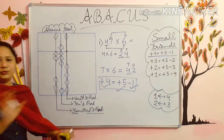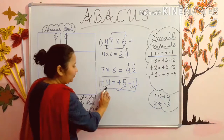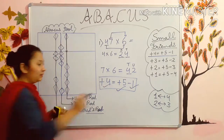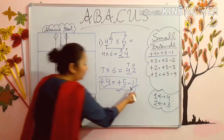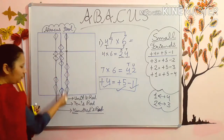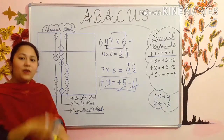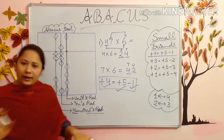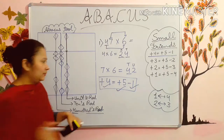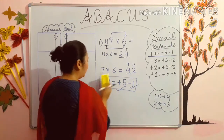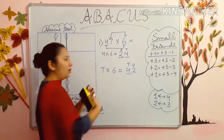Now nothing you have to do. I am repeating again — for adding 4, first of all what you have done? You added 5, then done minus 1. By doing this, you have added 4. Now nothing you have to do. Your 4 is added by using the formula.